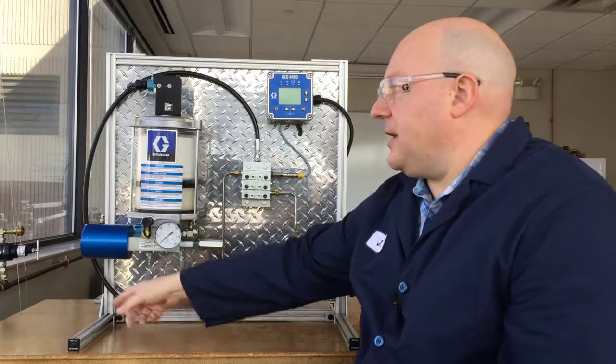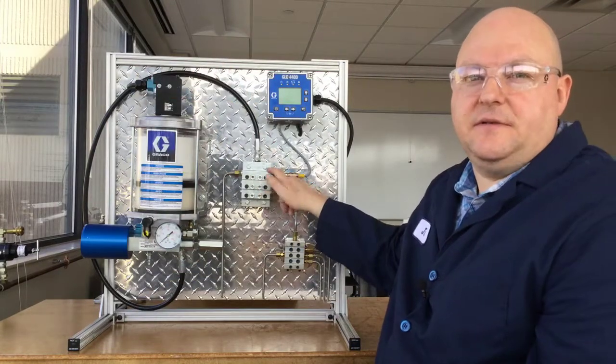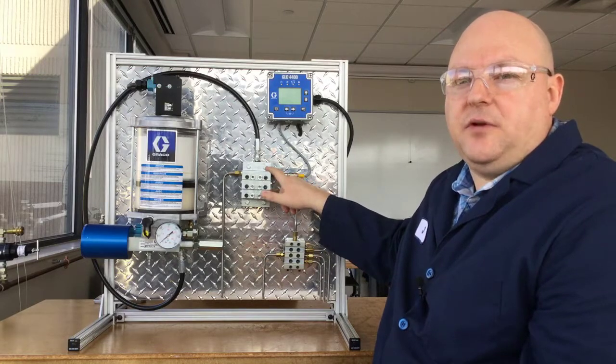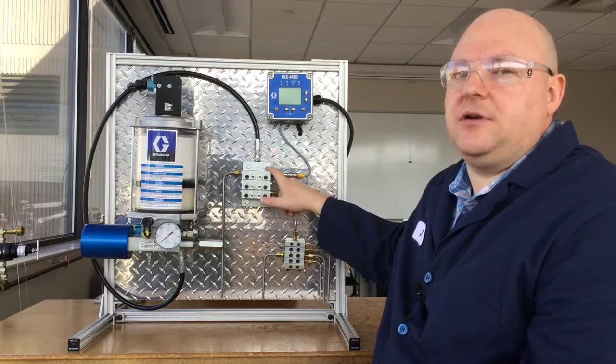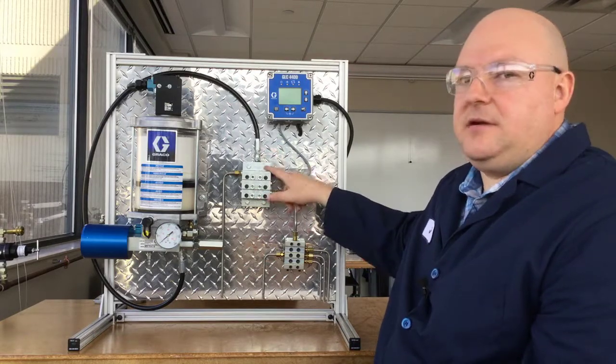Here we just have a hose running over to a series progressive divider valve. Moduflow pumps can be used for pump to point but most often you're going to hook them up to a divider valve. So that's what we have here.